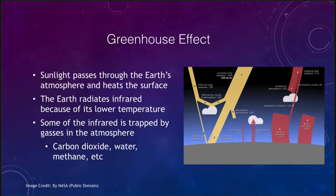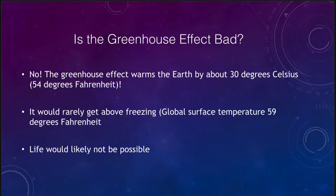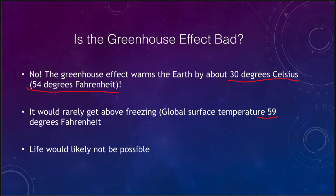Is the greenhouse effect bad? No — it's actually very important for the Earth. It warms the Earth by about 30 degrees Celsius, or about 54 degrees Fahrenheit. The average temperature is about 59 degrees Fahrenheit, so without the greenhouse effect it would be around 5 degrees Fahrenheit — well below freezing. Life would probably never have formed on Earth without it. That said, we don't want to turn into Venus, which has a runaway greenhouse effect with temperatures hot enough to melt lead.